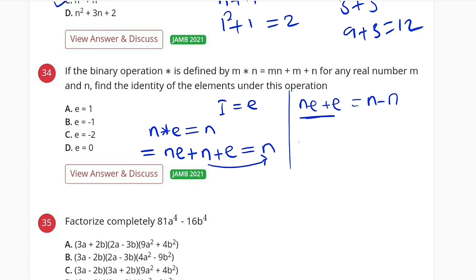We can factorize this. We have E in common: E times N plus 1. This equals 0. So either E or N plus 1 is equal to 0. But our goal is to find E, so let us set E to be equal to 0. Therefore, E equals 0, which is option D.